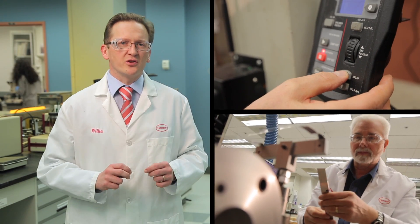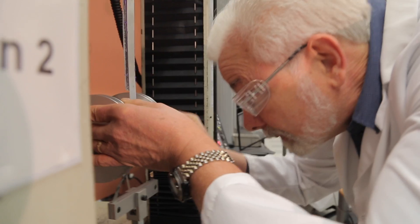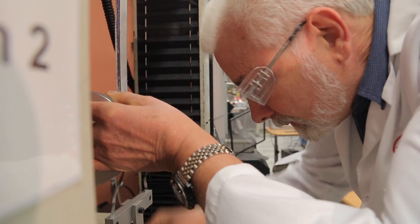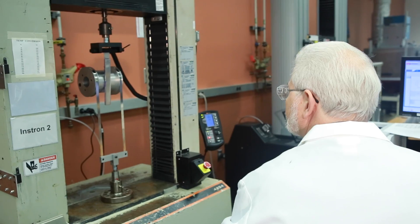A bonded assembly is secured in the climbing drum peel fixture in a mechanical properties tester. As the crosshead moves upward, the flexible substrate is wrapped around the drum fixture.